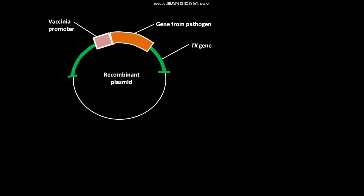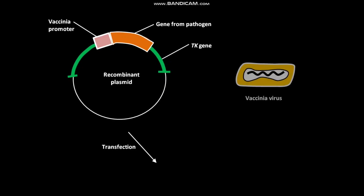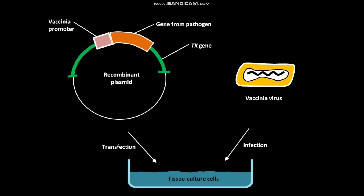The recombinant plasmid undergoes transfection and vaccinia virus undergoes infection simultaneously to tissue culture cells. The gene from pathogen and vaccinia promoter sequence undergoes homologous recombination at the site of the non-essential TK gene. As a result, a TK-minus recombinant virus is formed.